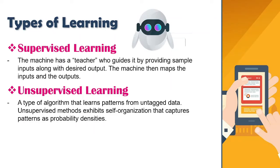There are two types of learning. First is supervised learning. The machine has a teacher who guides it by providing sample inputs along with desired output. The machine then maps the inputs and outputs. In supervised learning, you have input variables, for example x, and an output variable y, and you use an algorithm to learn the mapping function from the input to the output. The goal is to approximate the mapping function so well that when you have new input data x, you can predict the output variable y for that data.